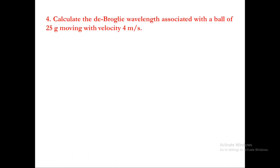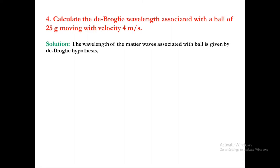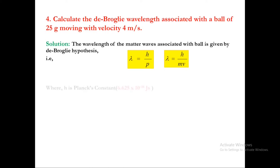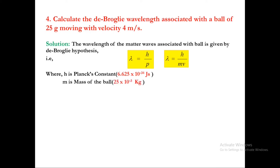Let us go to the next problem. Calculate the de Broglie wavelength associated with a ball of 25 grams moving with velocity 4 meters per second. The wavelength of matter waves associated with a ball is given by lambda equals h divided by p, where p is the momentum. Or we can write it as h divided by mv, substituting mass times velocity for momentum. Now we list out the given data. H is Planck's constant, and m is the mass of the ball given as 25 grams.